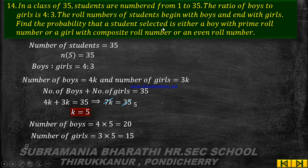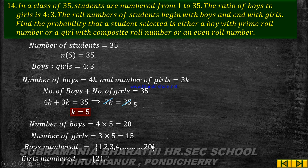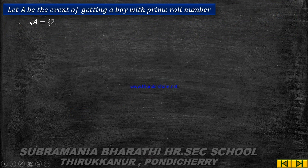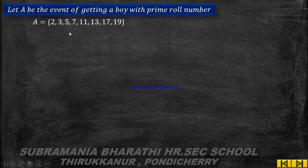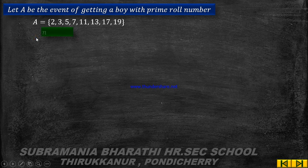Let A be the event of selecting a boy with a prime roll number. Boys are numbered 1 to 20. Prime numbers from 1 to 20 are: 2, 3, 5, 7, 11, 13, 17, 19. So n(A) equals 8. P(A) equals n(A) by n(S), which is 8 by 35.